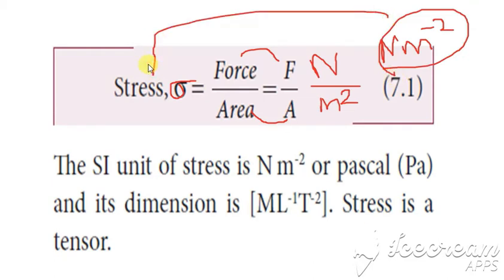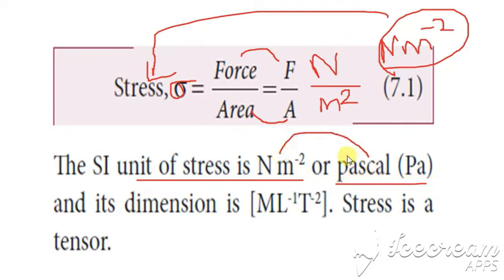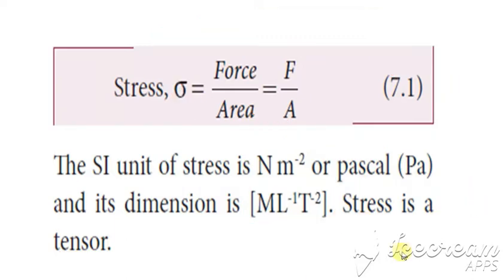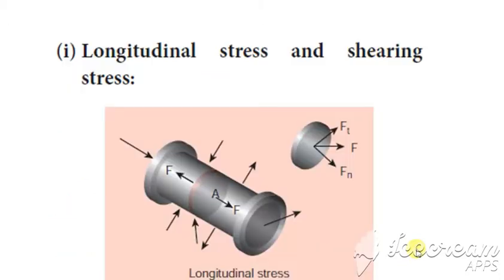The unit of stress is N·m⁻² or Pascal. Its dimensional formula is M L⁻¹ T⁻². Stress is a tensor.